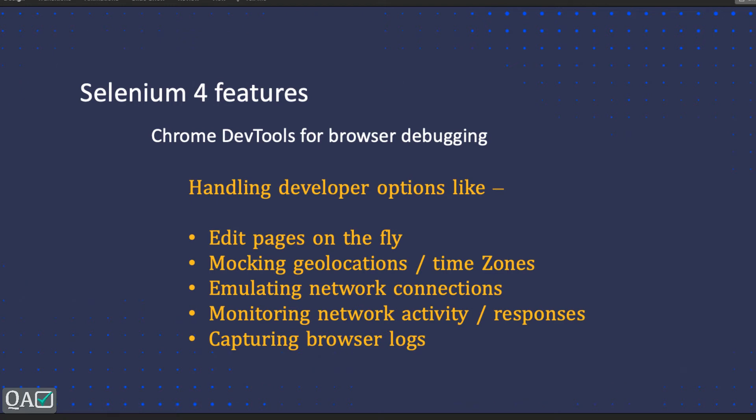Welcome back. In this session we will see one of the Selenium 4 features: how we can mock geolocation or the time zone. We have discussed a few of the Chrome DevTools features in our previous session — basically what we can do with respect to Chrome DevTools. When you click on inspect element or the developer tool, you get some tabs like the Element tab, Network tab, Security, Application, and so on.